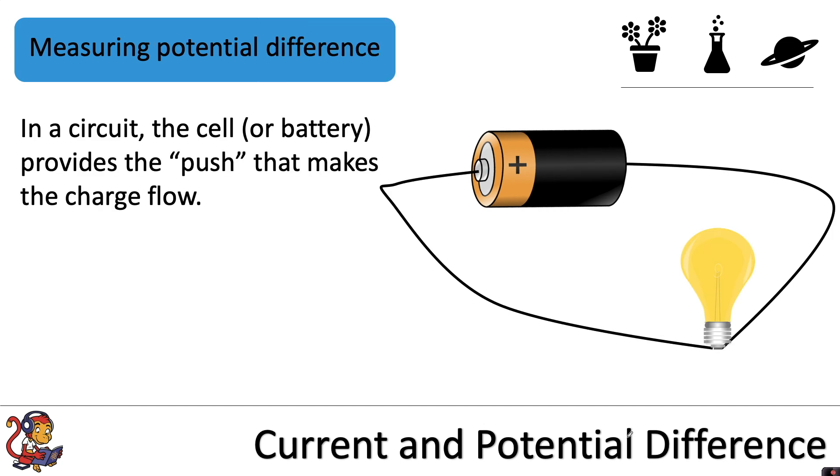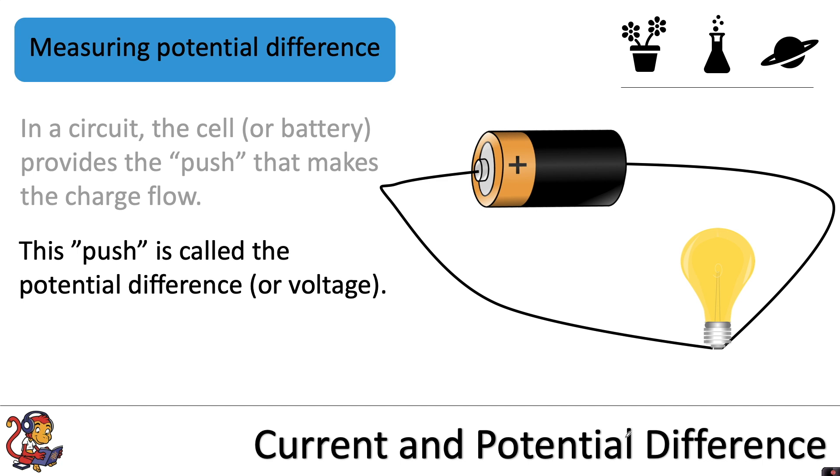Now let's look at potential difference. In a circuit the cell, or if you have lots of cells together a battery, provides the push that makes the charge flow. This push is called the potential difference, or sometimes you might see it written as voltage, but it's a lot better to use the words potential difference.